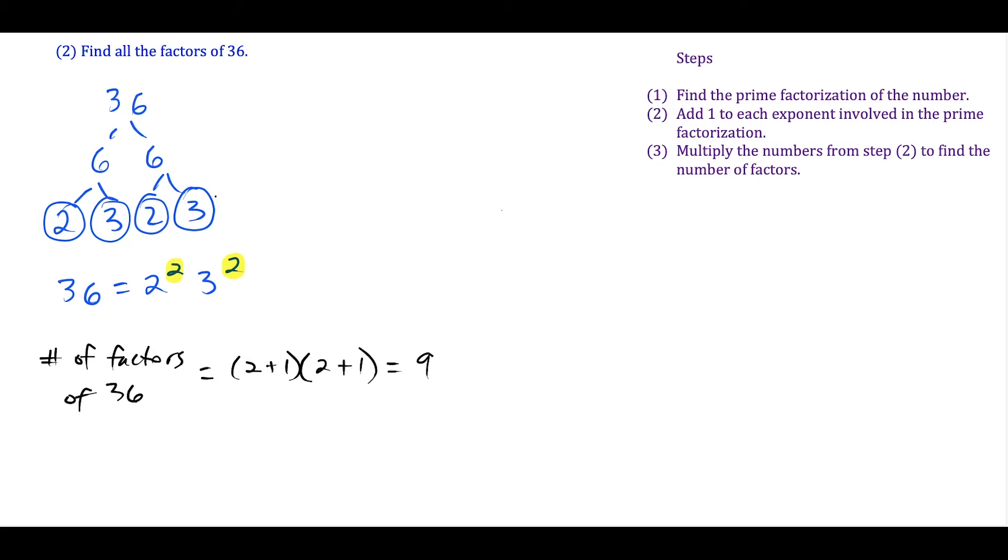This tells us 36 has 9 factors. We start listing them: 1 times 36, 2 times 18, 3 times 12, 4 times 9, and then 6 times 6. This sometimes throws people off because they count 10 factors, but we should only get 9. Notice 36 is a perfect square with repeating factors—it has 6 times 6. But when counting factors, we're not going to count 6 twice.